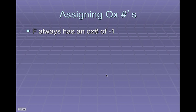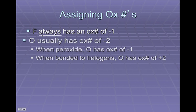There are a couple of rules when it comes to assigning an oxidation number. First of all, fluorine, when it's in a compound, will always — and you don't see 'always' very often in this class — always have an oxidation number of -1. That's because fluorine gains one electron when bonding to look like neon.